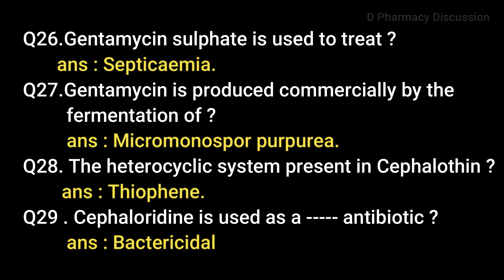Question 28: The heterocyclic system present in cephalothin is thiophene. Question 29: Cephaloridine is used as a bactericidal antibiotic. Cephalothin and cephaloridine are the antibiotics included in the classification of cephalosporins. Cephalosporins are the antibiotics obtained from the species of fungus Cephalosporium.